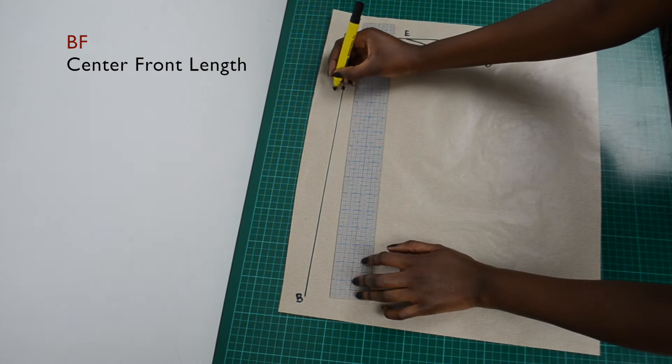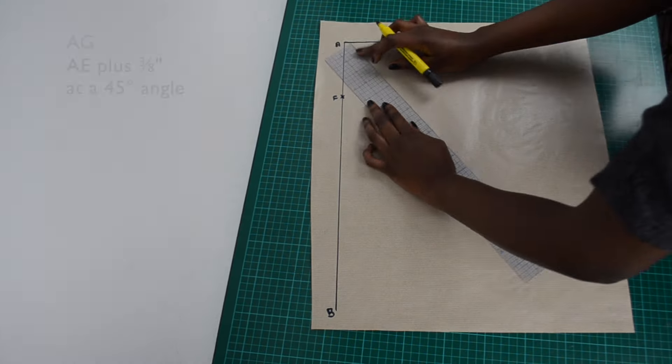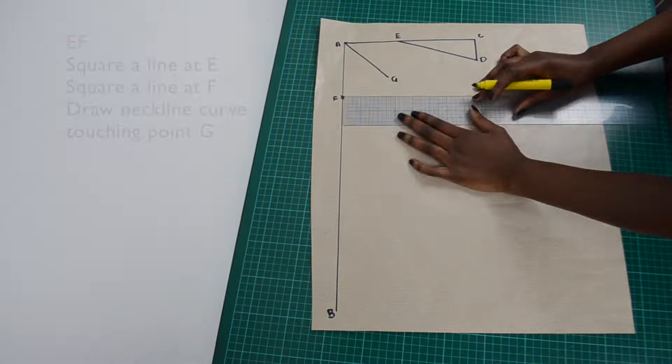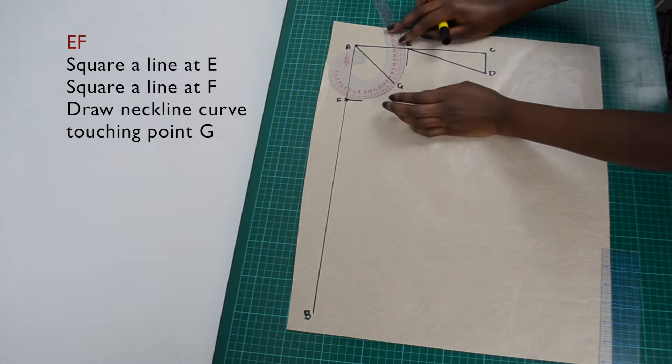On line AB, mark your center front length from B. This line should be drawn at an approximate 45 degree angle. Make sure the neckline curve touches point G.